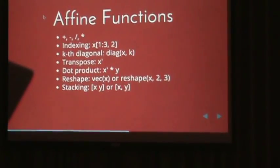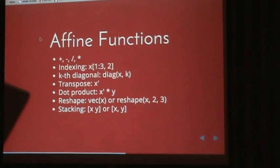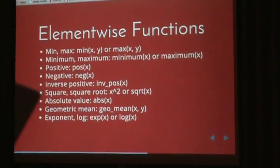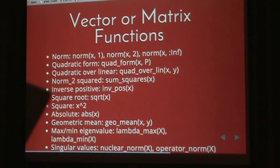The kind of functions we support - we want to be very expressive. We don't want you to reinvent the wheel or make large matrices for things. For example, if you want to vectorize something or reshape something, we have functions to reshape. If you want to transpose, we have affine functions like taking the kth diagonal of a matrix or converting a vector into a diagonal matrix. There are element-wise functions such as min, max, minimum, maximum, inverse pos, square, square root, geometric mean, exponent, log. So you could have a problem of the form minimize sum e to the power x subject to log x is greater than or equal to 1. It's a convex problem and that's exactly how you write it. Your mathematical formulation and your Convex formulation are exactly the same.